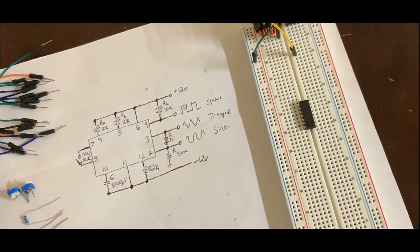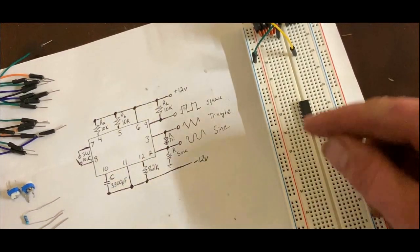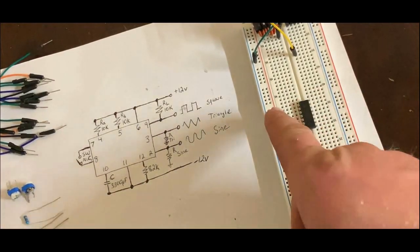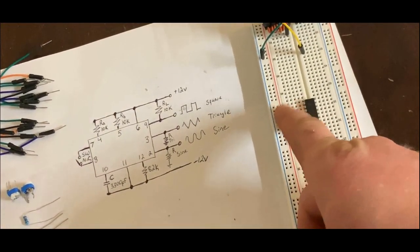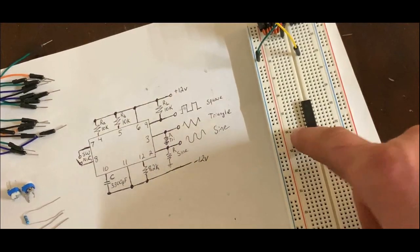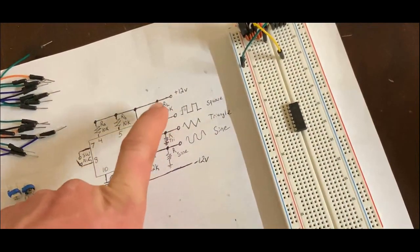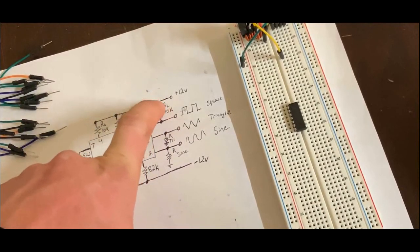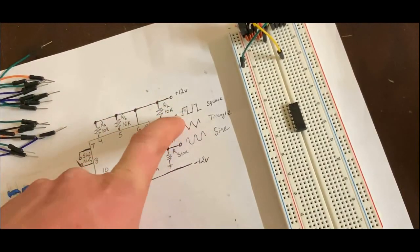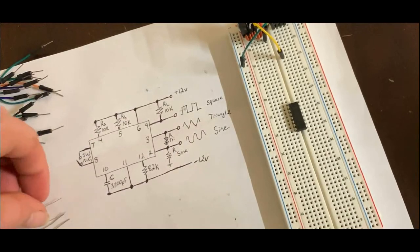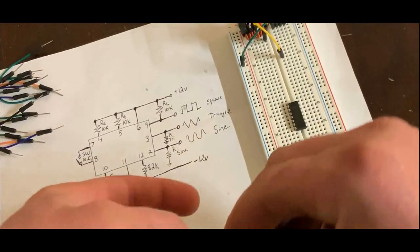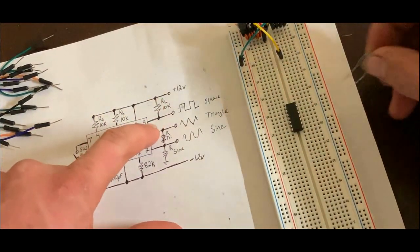Okay, so let's go ahead and start building this circuit. I've already got the chip placed on the board with the alignment pin on the top. This is pin 1 on the top, 7, 8, 14. And the first thing I'm going to look at is the 10K resistor going from positive 12 volts to pin 9 where you can take your square wave output. So with the resistor, I'm going to go from positive 12 volts to pin 9.